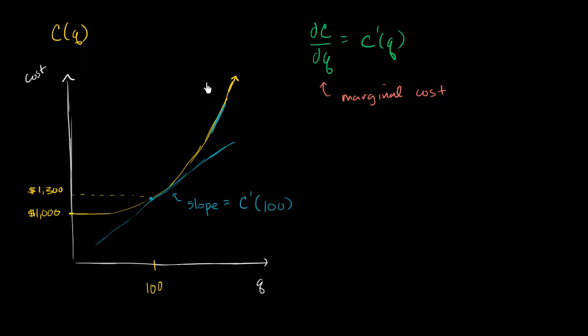So in a calculus context, or I guess you'd say in an economics context, if you can model your cost as a function of quantity, the derivative of that is the marginal cost. It's the rate at which costs are increasing for that incremental unit.